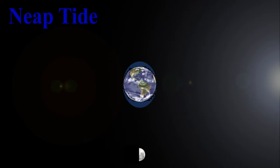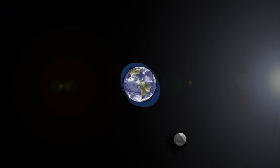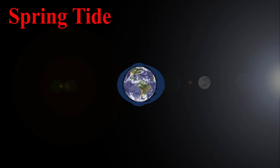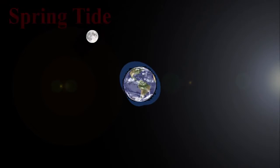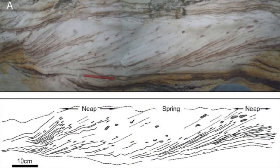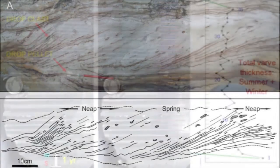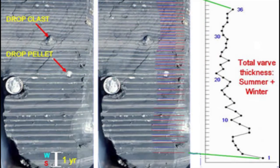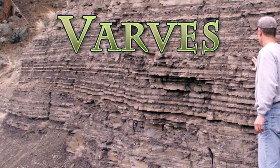We also know the tides went in and out back then because we have rhythmic sedimentary sequences that show repeated cycles of depositional environments. If spring tides and neap tides are causing the rhythms we see in the sediment, we call such rhythmic deposits tidal bundles.